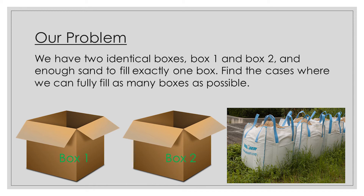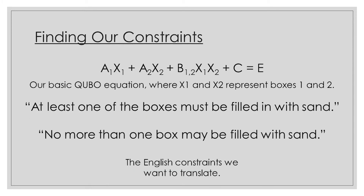Let's start off as we usually do, with a basic example. Here we have a brief description of our problem in English. We have two identical boxes and enough sand to fill exactly one box. Our two conditions are the following: at least one of the boxes must be completely filled in, and due to our quantity of sand, no more than one box can be filled in.